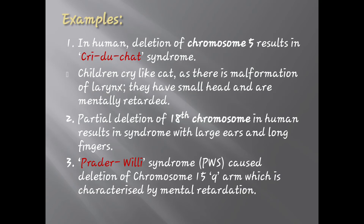Deletion causes certain diseases or syndromes. In humans, deletion of chromosome 5 results in Cri-du-chat syndrome — a French word meaning 'cry like a cat.' Children cry like a cat due to malformation of the larynx. They have a small head and are mentally retarded. Partial deletion of chromosome 18 in humans results in a syndrome with large ears and long fingers.